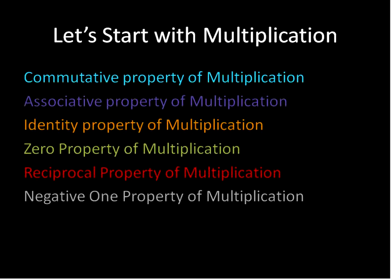We're going to talk about the commutative, associative, identity, zero, reciprocal, and negative one property of multiplication. All of these, again, it's a lot of vocabulary.